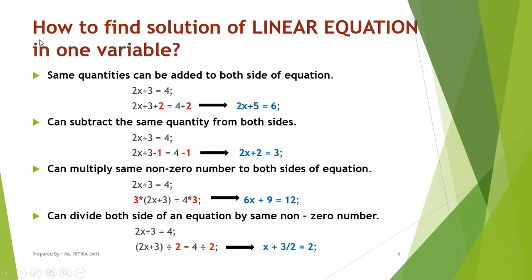Now let's move to the steps — how to find the solution of a linear equation in one variable. There are four operations which we can perform. The first step: the same quantity can be added to both sides of the equation. For example, I have added 2 on both sides, so my new equation becomes 2x plus 5 equals 6. This equation is equivalent to the given equation, and solving either will give the same value of x.